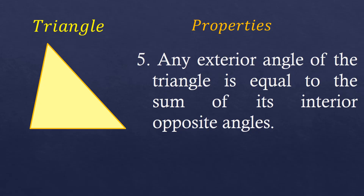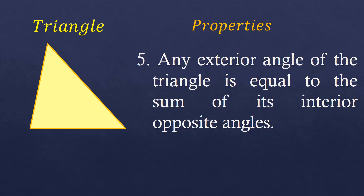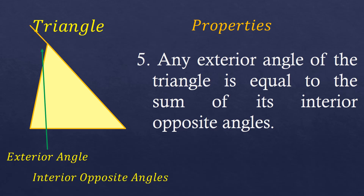Another way to illustrate the exterior angle — let's say it's here at the bottom. So this is the exterior angle, and the interior opposite angles will be these two angles. Another one: if you're going to put a line on top, the exterior angle will be there, and the interior opposite angles will be these two angles.